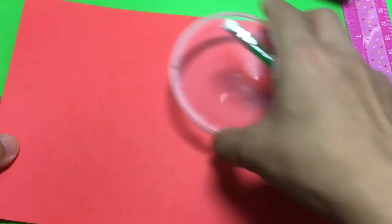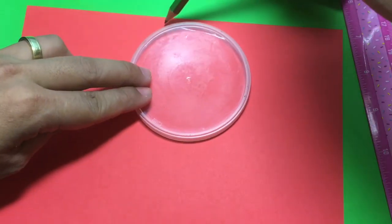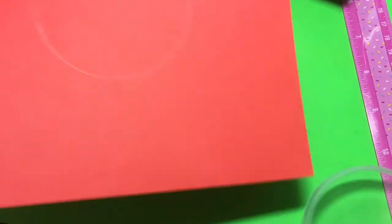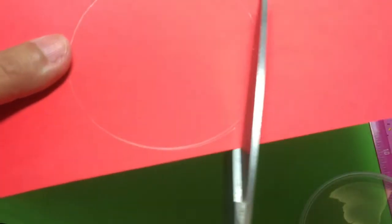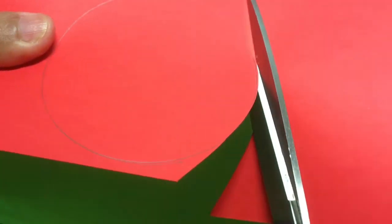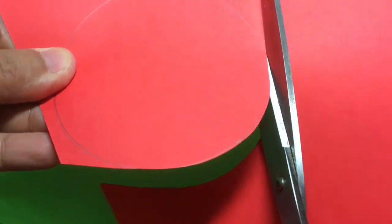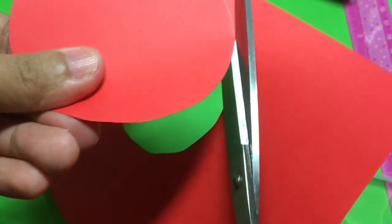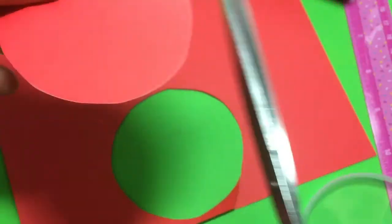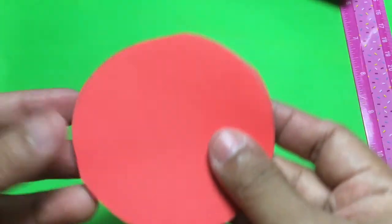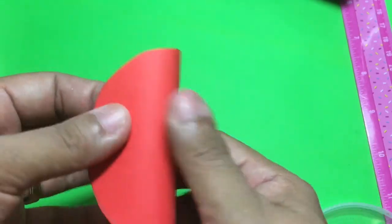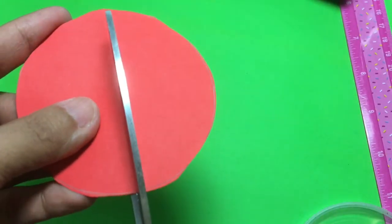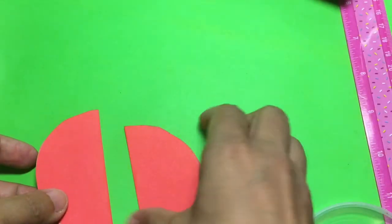Next, get your red paper, draw a circle. Then, cut it. Fold it in half. Cut it. Set aside.